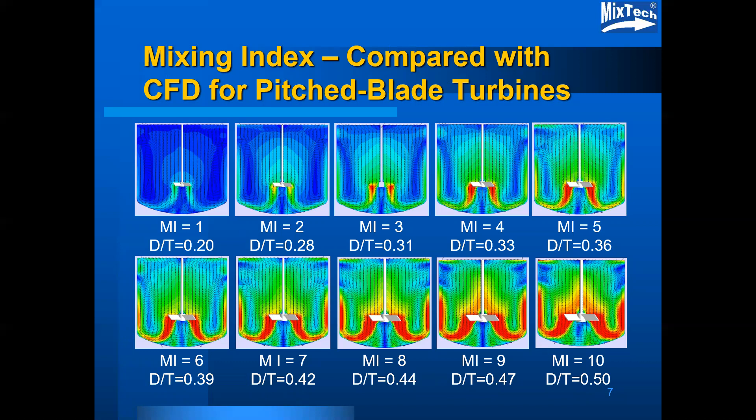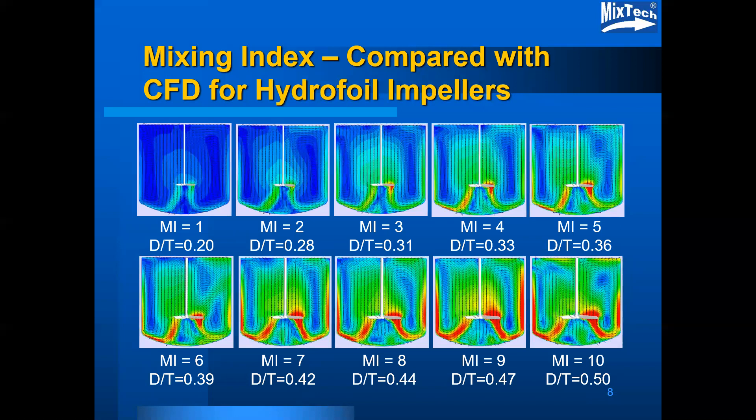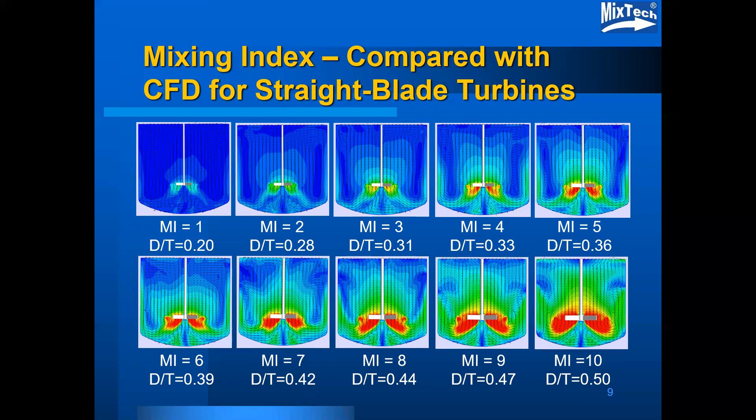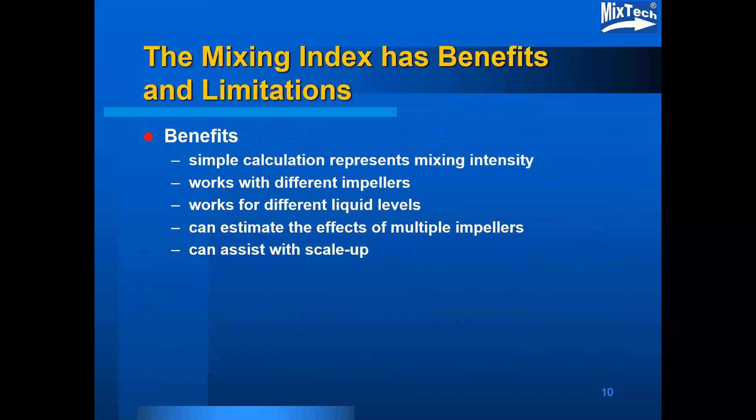As can be seen, there are differences between the different mixing index values, but the differences at times are subtle or at least vague as far as interpreting which is more or less intense. The same 1 to 10 scale for mixing index can be shown with hydrofoil impellers, with straight blade impellers, and in this case with radial flow impellers.